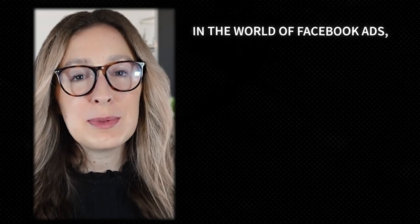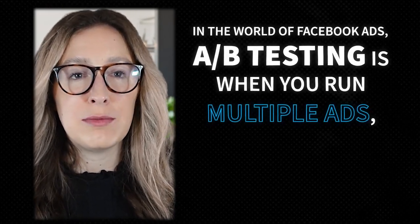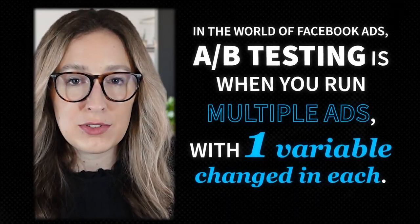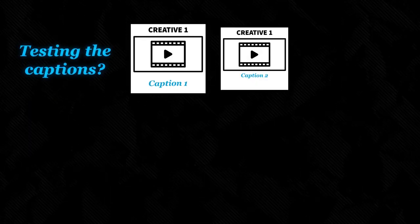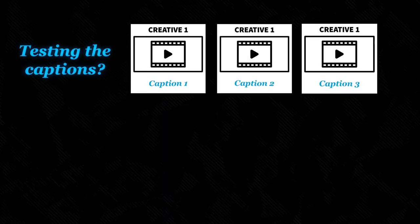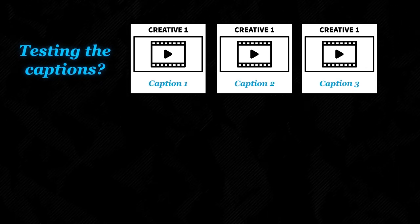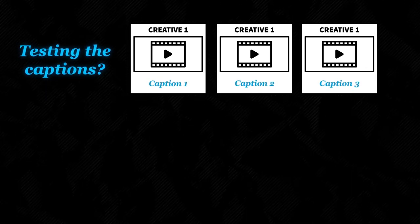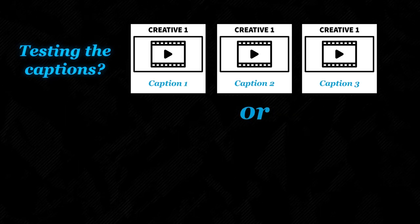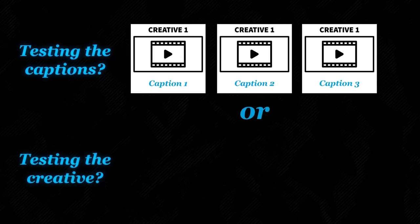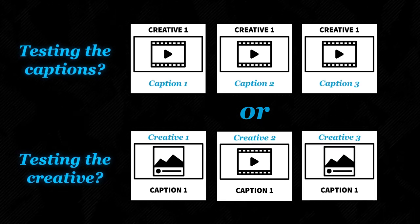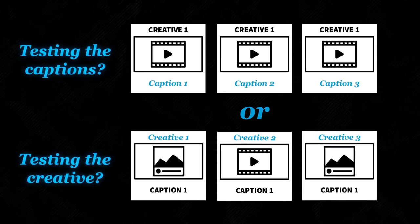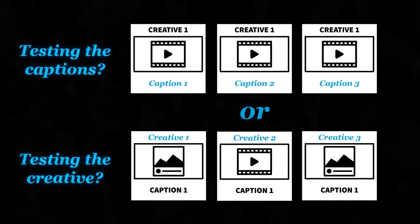In the world of Facebook ads, A-B split testing is when you run multiple ads with one variable changed in each. For example, if you're wanting to test out different captions, you would run the same creative — being an image or video — for multiple ads, but give each ad a different caption. Or vice versa: if you're wanting to test the creative, you would run a different image or video in each ad but keep the caption the same in all of them.